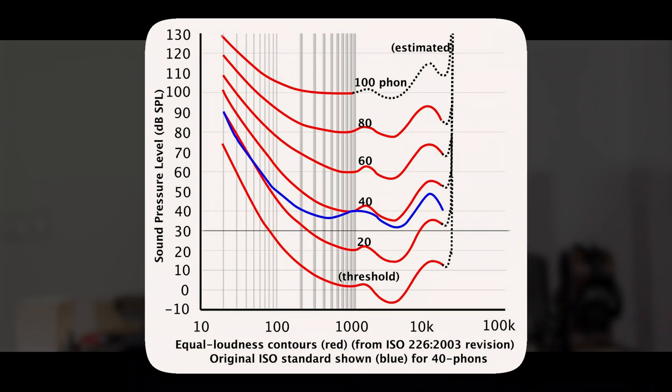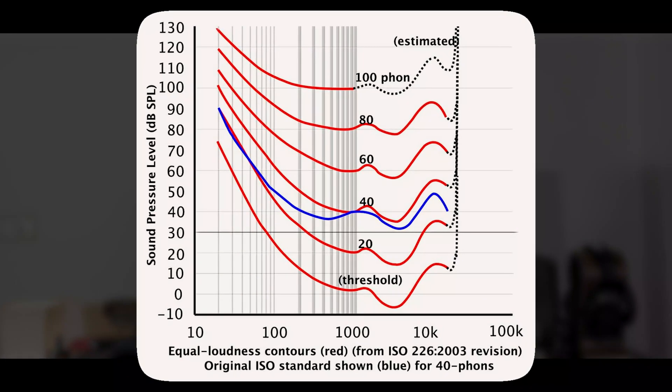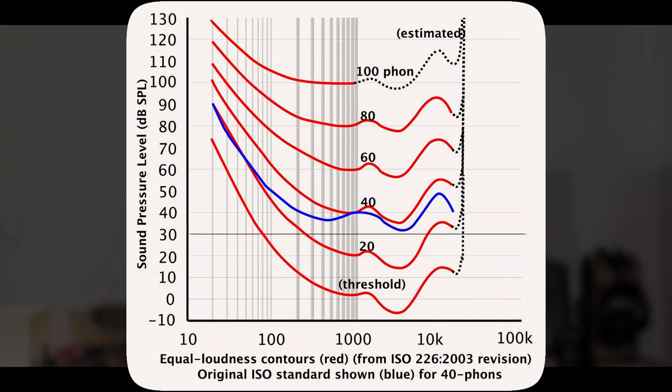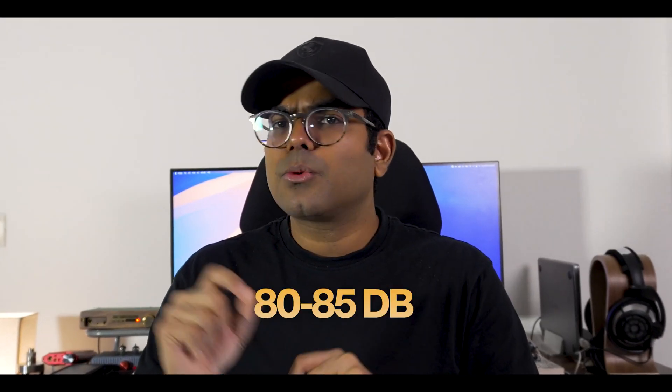Number two is the Fletcher-Munson curve. Not many people focus on this one, but it is one of the most important topics in this industry. Our ears listen to all frequencies at exactly the same level at around 80 to 85 decibels SPL. When you're listening at, say, 20 or 30 decibels, mid-range is clear but bass and treble are not. With an increase in volume all frequencies balance out. So when you use a DAC and amp the sound is generally louder — and if you're not doing a volume match, that sudden increase in volume is perceived as better sound.